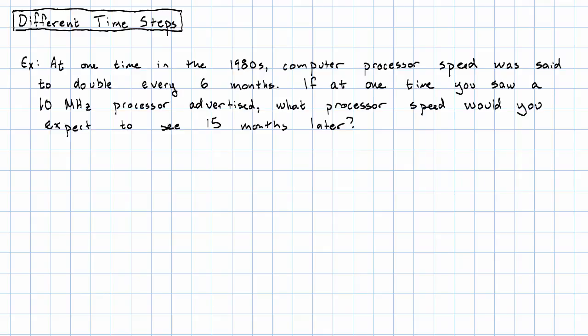What if we're given a story that looks something like this? At one point in the 80s, computer processor speed was said to double every six months. If at one time you saw a 10 megahertz processor advertised, what processor speed would you expect to see 15 months later?